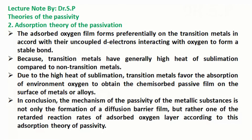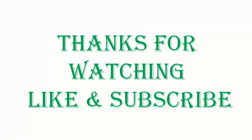Due to the high heat of sublimation, transition metals favor the absorption of environmental oxygen to obtain the chemisorbed passive film on the surface of metals or alloys. In conclusion, the mechanism of the passivity of metallic substances is not only the formation of a diffusion barrier film, but rather one of the retarded reaction rates of the adsorbed oxygen layer, according to this adsorption theory of passivity.